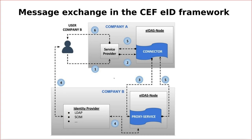On this slide, there is a sample process for identifying citizens who try to use a service from another country. The user is a citizen of Country A who tries to use a public service from Country B. In this case, the user uses the service provider of their own country, which connects to an EIDAS node. That node identifies that the user wants to use a service from Country B and proxies the identification request to the other country.